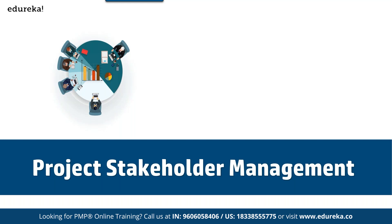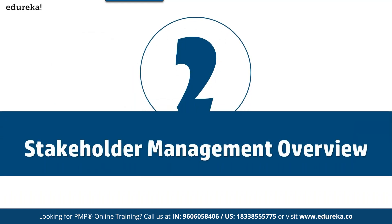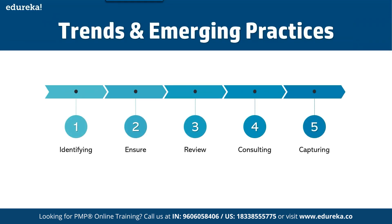Moving on, let's have an overview of stakeholder management, which is broadly categorized into five different categories. First is identifying — you have to identify all the stakeholders. Second is ensuring — ensuring that all team members are involved in stakeholder engagement activities. Third is reviewing — reviewing the stakeholder community regularly. Fourth is consulting — consulting with stakeholders.